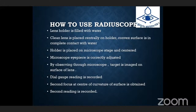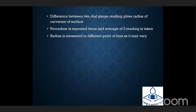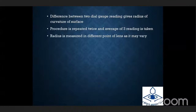To use a radius scope: the lens holder is filled with water, then a thin lens is placed centrally on the holder with the concave surface in complete contact with the water. The holder is placed on the microscope stage and centered. The eyepiece is correctly adjusted. By observing through the microscope, the target is imaged on the surface of the lens and the dial gauge reading is recorded. A second focus at the center of curvature of the surface is obtained and the second reading is recorded. The difference between the two dial gauge readings gives the radius of curvature of the lens. The procedure should be repeated two or three times and an average of three readings is taken.